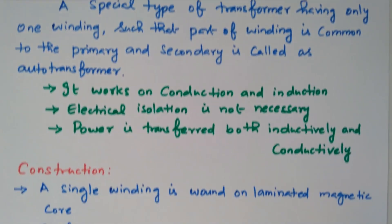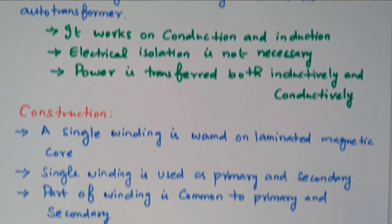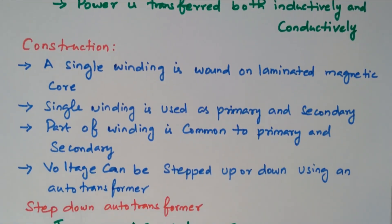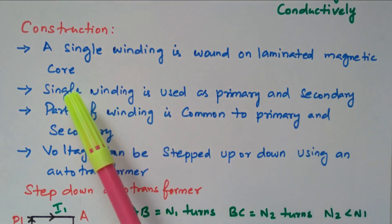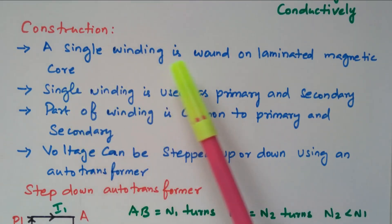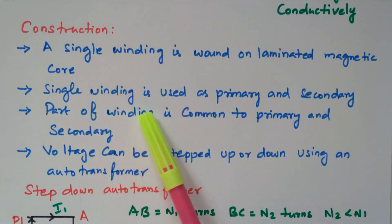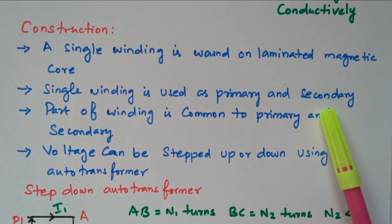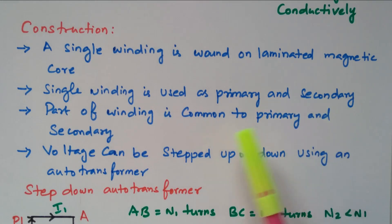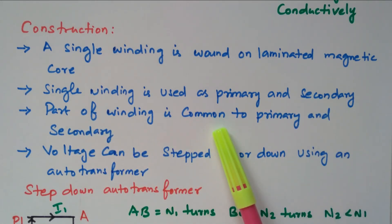Now we will see the construction of this auto transformer. A single winding is wound on a laminated magnetic core — only one winding is available. This single winding is used as both primary and secondary; part is used as primary and part as secondary, with a portion of the winding common to both.